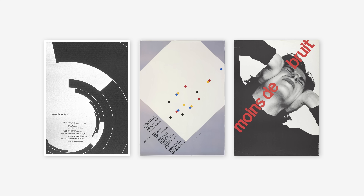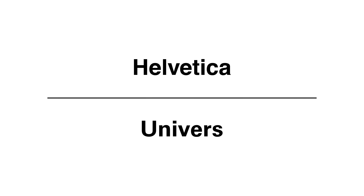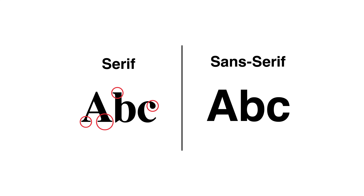He believed that the grid was an essential tool for achieving clarity and consistency in design. Müller-Brockmann also preferred sans-serif typefaces, such as Helvetica, for their clean and modern appearance. He argued that sans-serif fonts were more legible and suited the minimalist aesthetic of Swiss design.